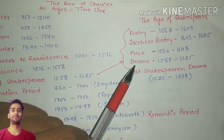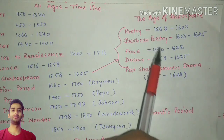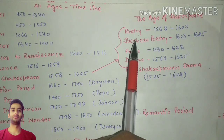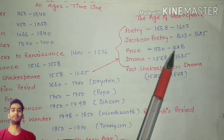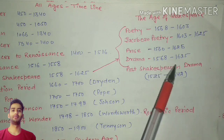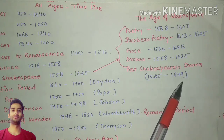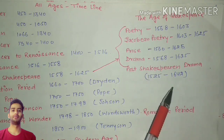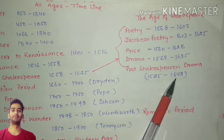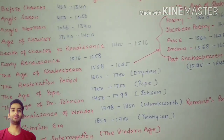If these are studied separately, we need to remember these dates: poetry 1516 to 1603, Jacobean poetry 1603 to 1625, prose 1560 to 1625, and drama 1568 to 1625. Post-Shakespearean drama is between 1625 to 1642. In 1616 Shakespeare passed away, and 1642 is important because in that year all the theaters were closed by the Puritans.